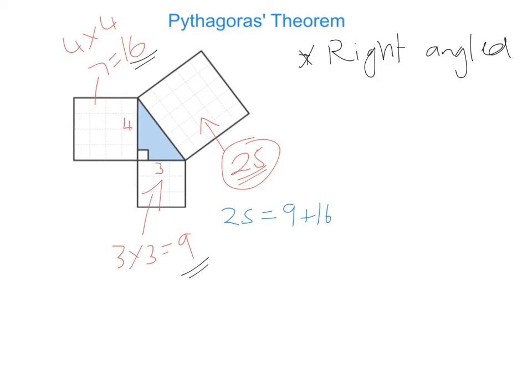So if we know that the area of that entire square is 25 square units, then to go backwards to find the length of this hypotenuse, we just had to find the square root of 25, which was 5. And that's basically how Pythagoras' theorem works.